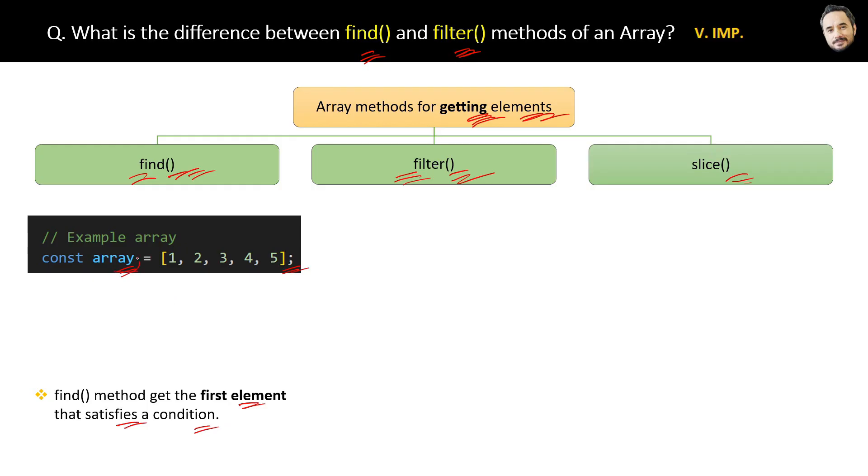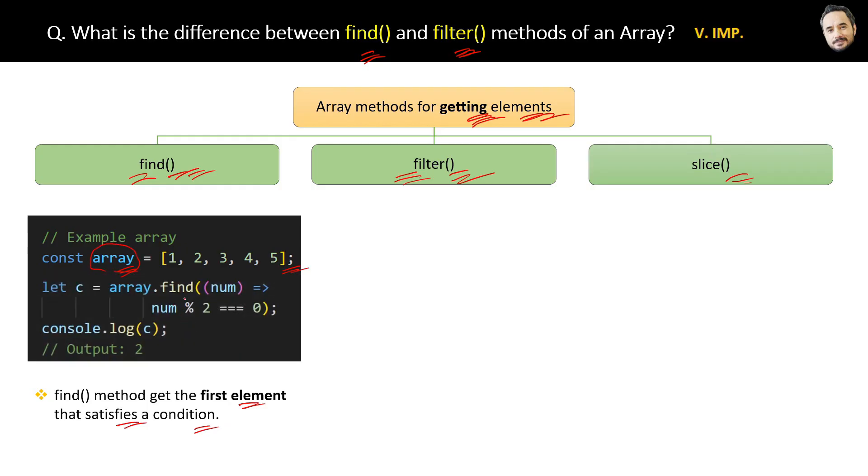Here you can see that the find method will accept all the elements of the array one by one in this num parameter by using the arrow function. That is an arrow function. Arrow functions are like normal functions and they accept parameters like normal functions.